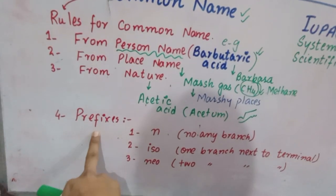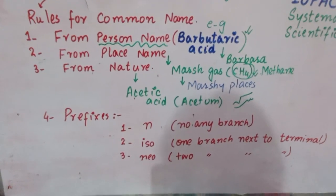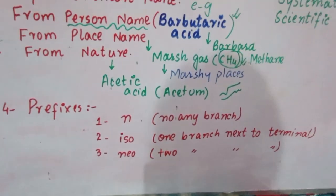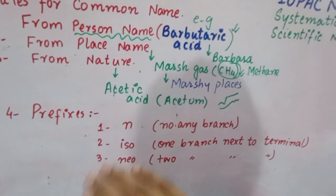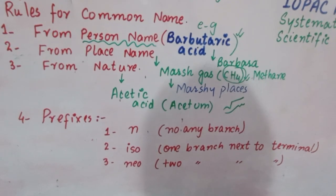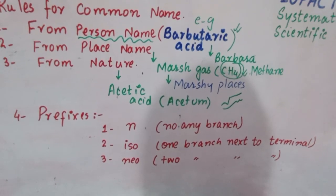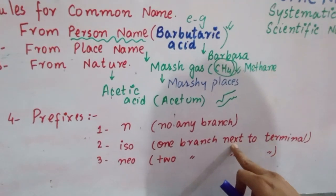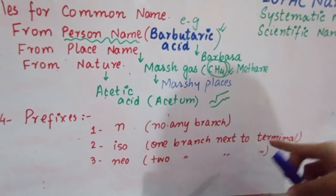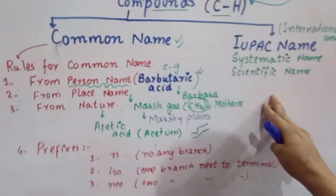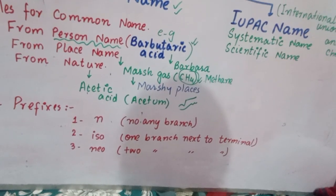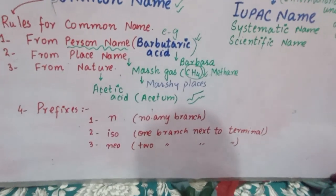In common names we also use prefixes. Sometimes we will use n, iso, neo. You should note that n means there will always be a straight chain - there will be no any branch. Iso means there will be one branch in the organic compound that will be exactly next to the terminal. Terminal carbon will be the corner carbon - you will easily understand when we discuss IUPAC name in the next lecture. And neo means two carbons next to the terminal.